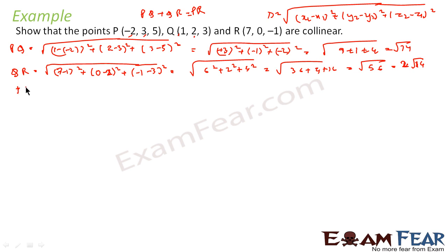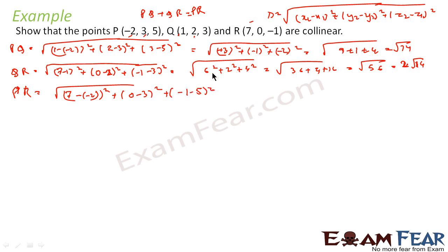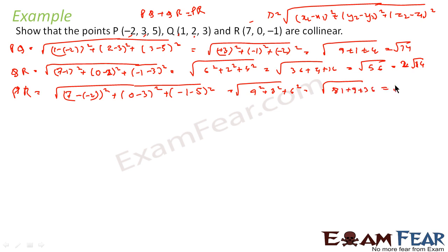Now we find PR. PR = √[(7−(−2))²  + ...] which comes out to be √126 = 3√14. That is the value of PR.